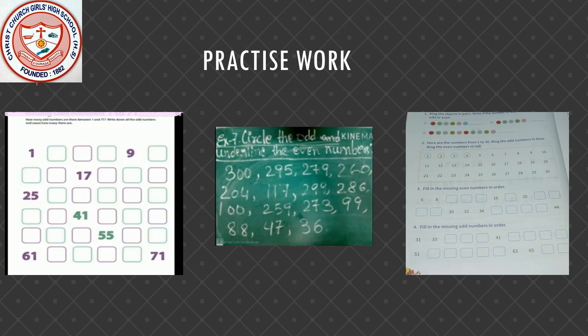The next exercise: circle the odd numbers and underline the even numbers. The numbers given are: 300, 295, 279, 260, 204, 117, 299, 286, 100, 259, 273, 99, 88, 47, and 32. You have to circle the odd numbers and underline the even numbers.